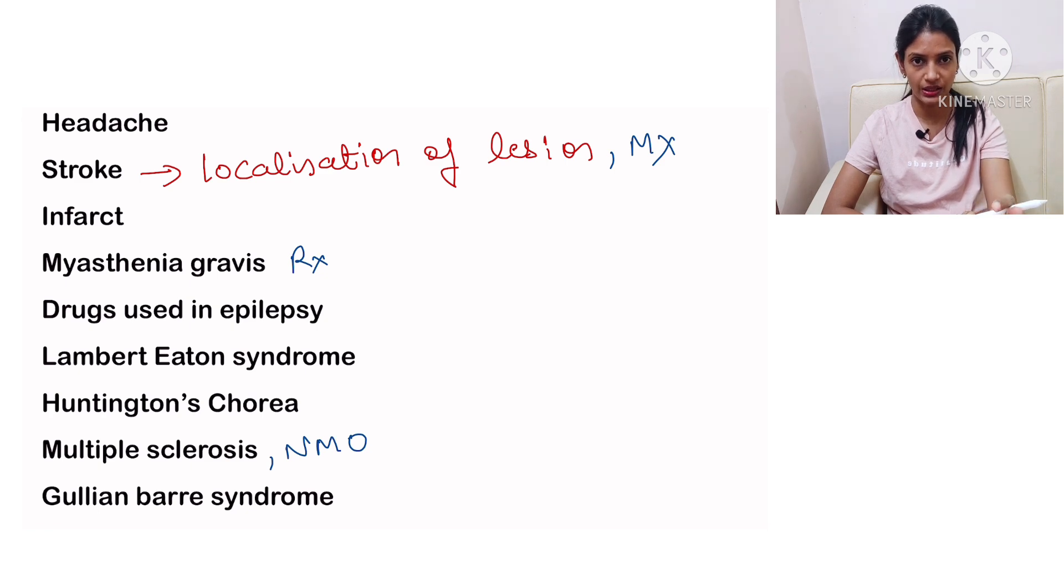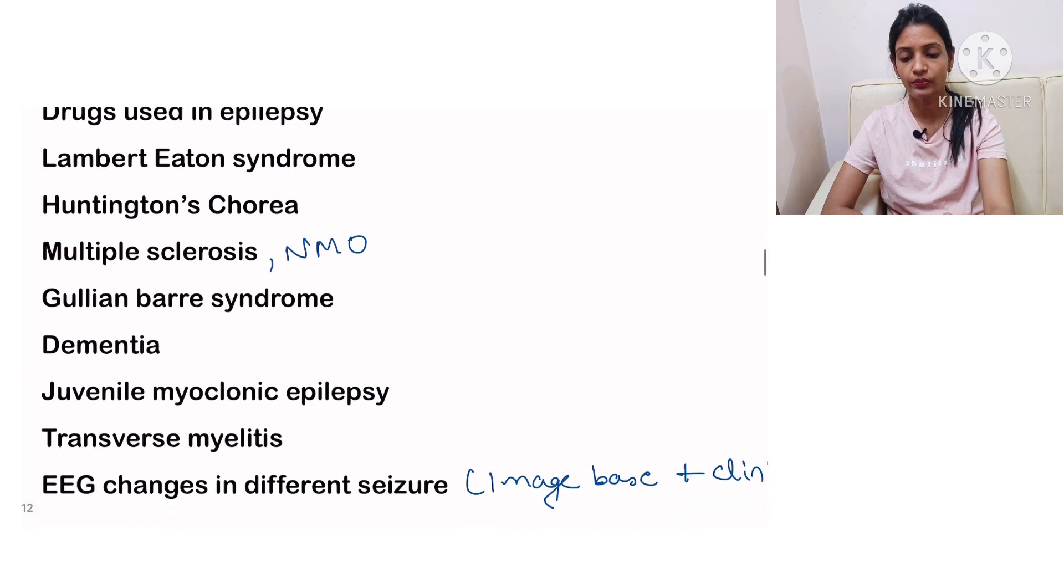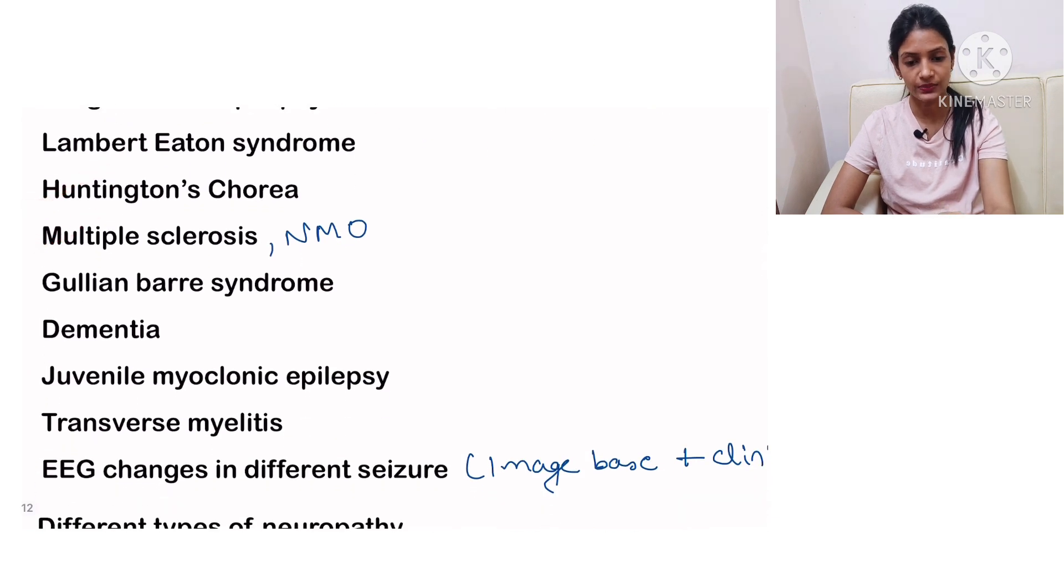You should be aware in which epilepsy, in which type of seizures, what drug is used, which is the drug of choice, what are its indications, what are its side effects. Next is Lambert-Eaton syndrome, Huntington chorea, multiple sclerosis, NMO.